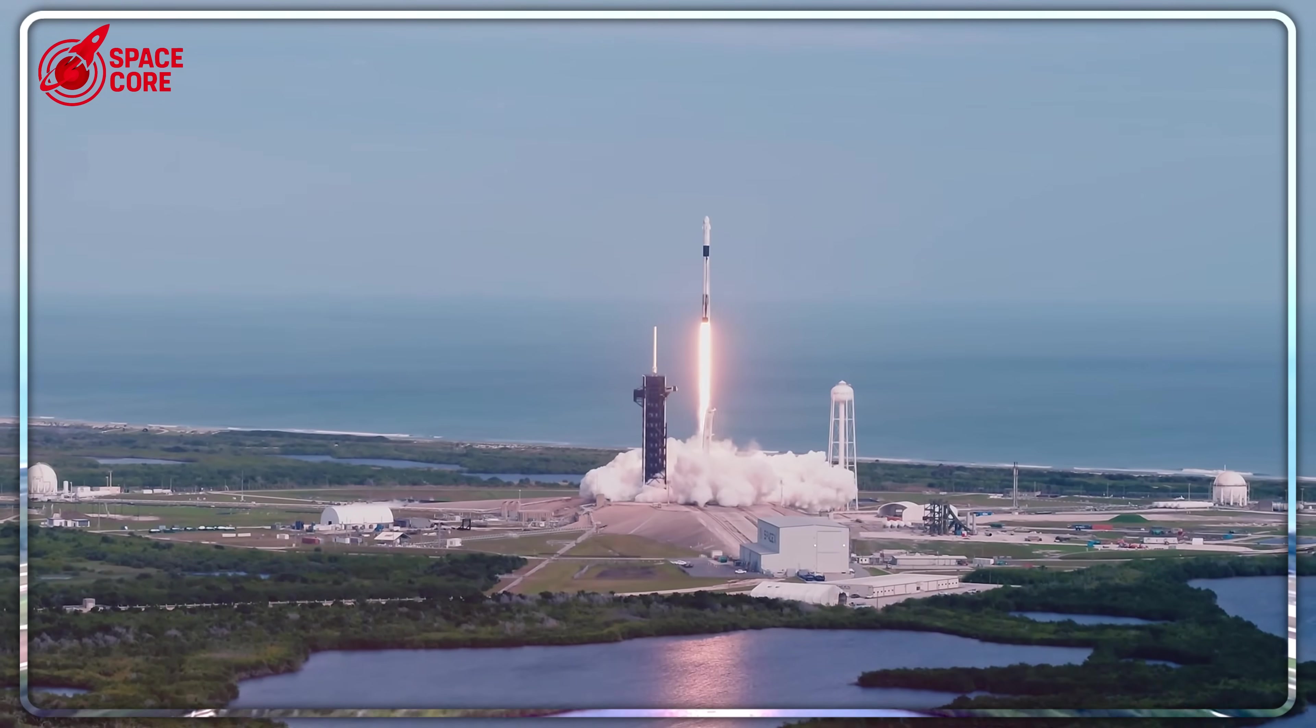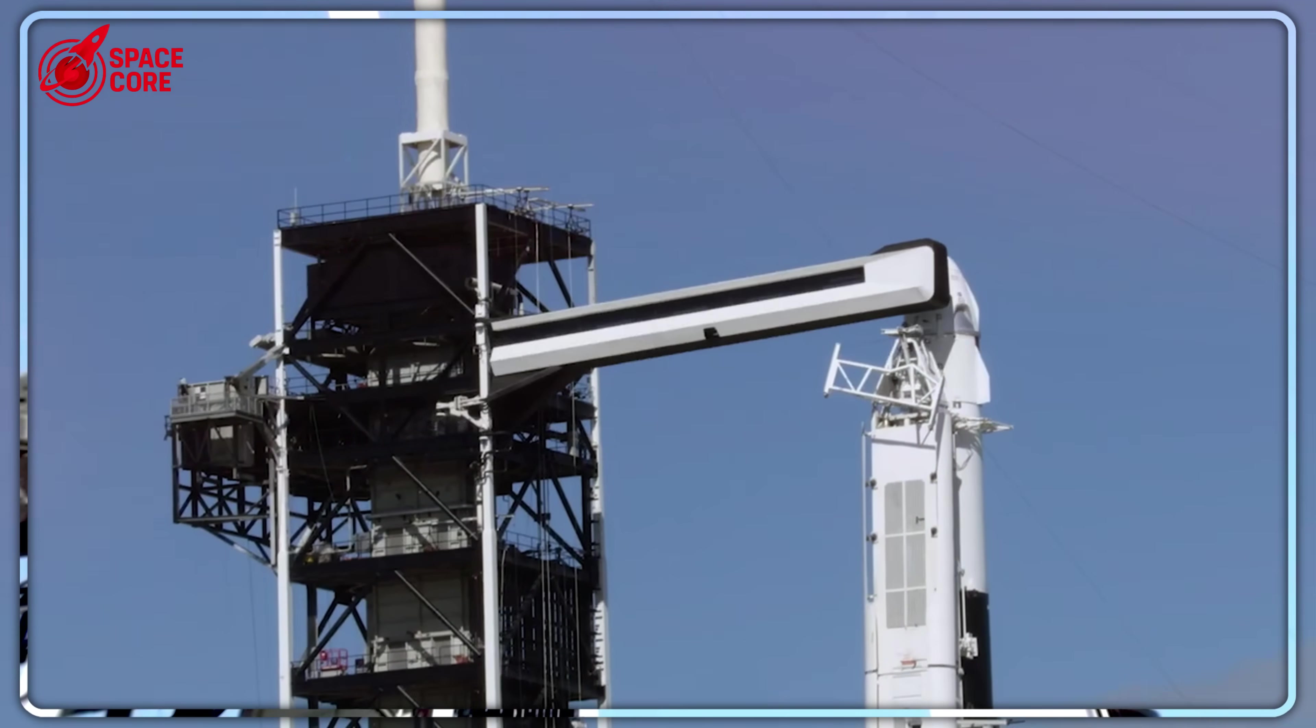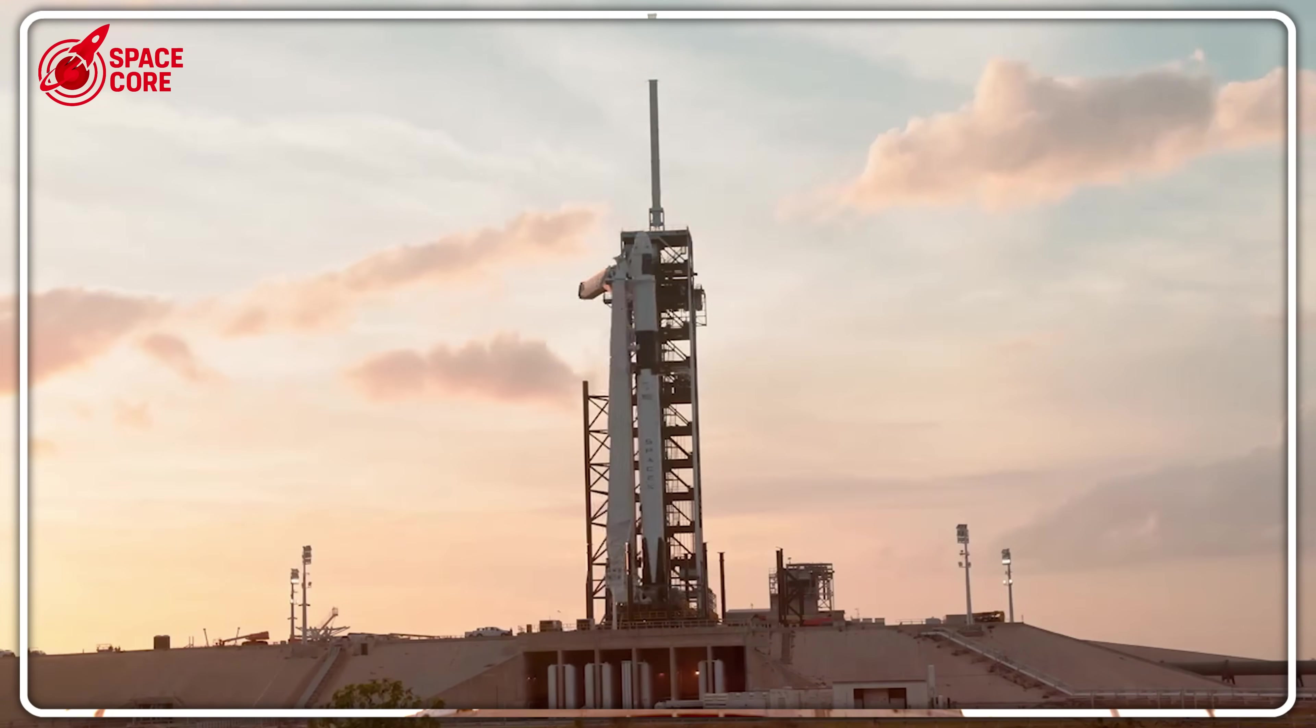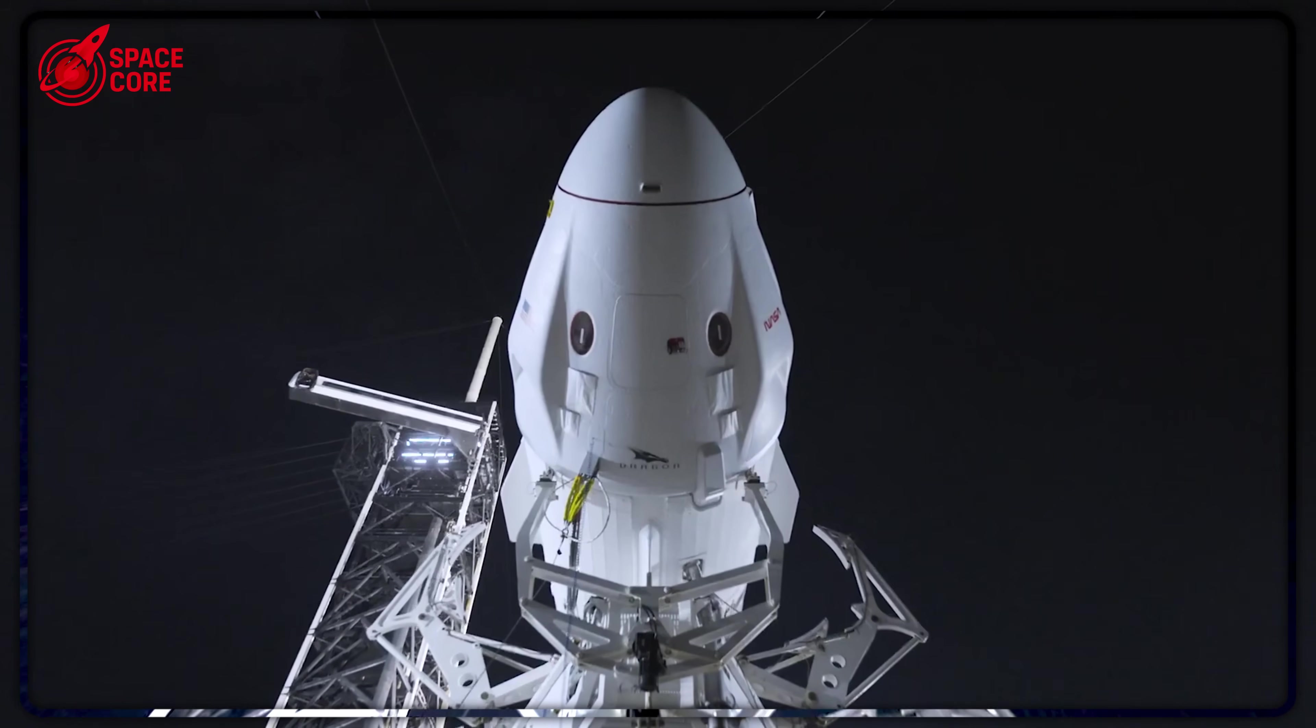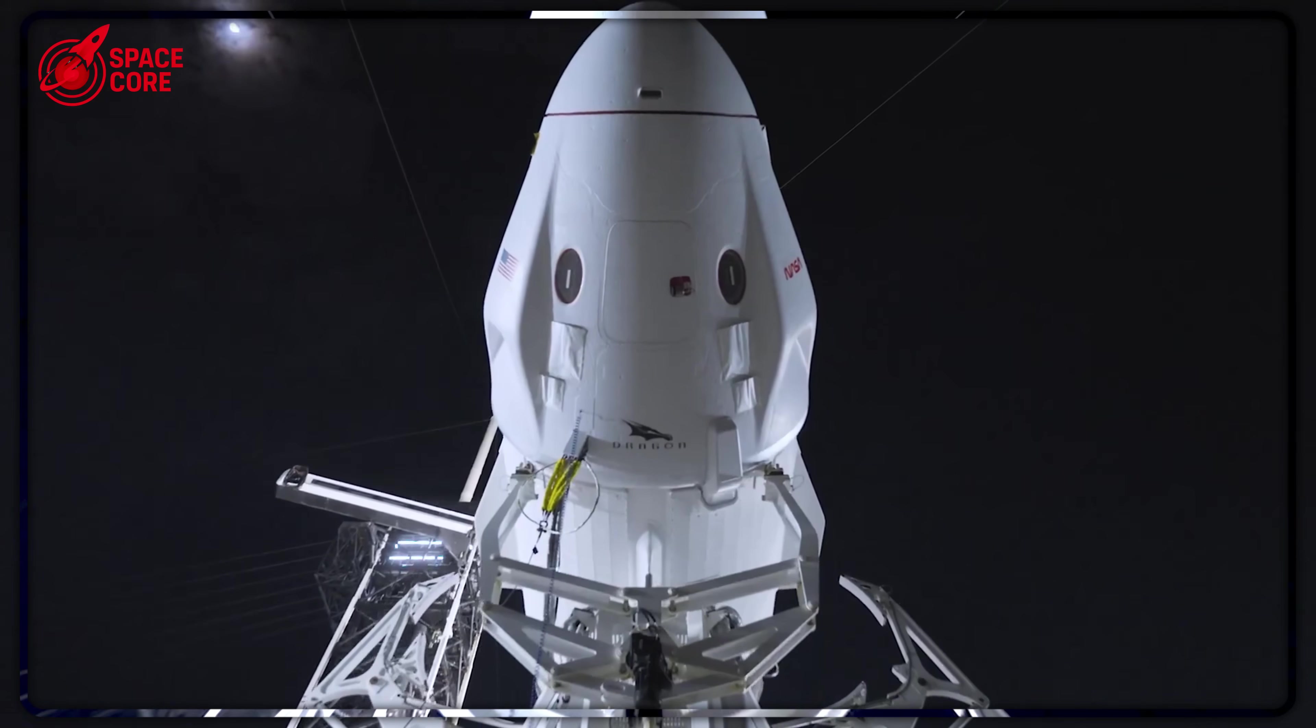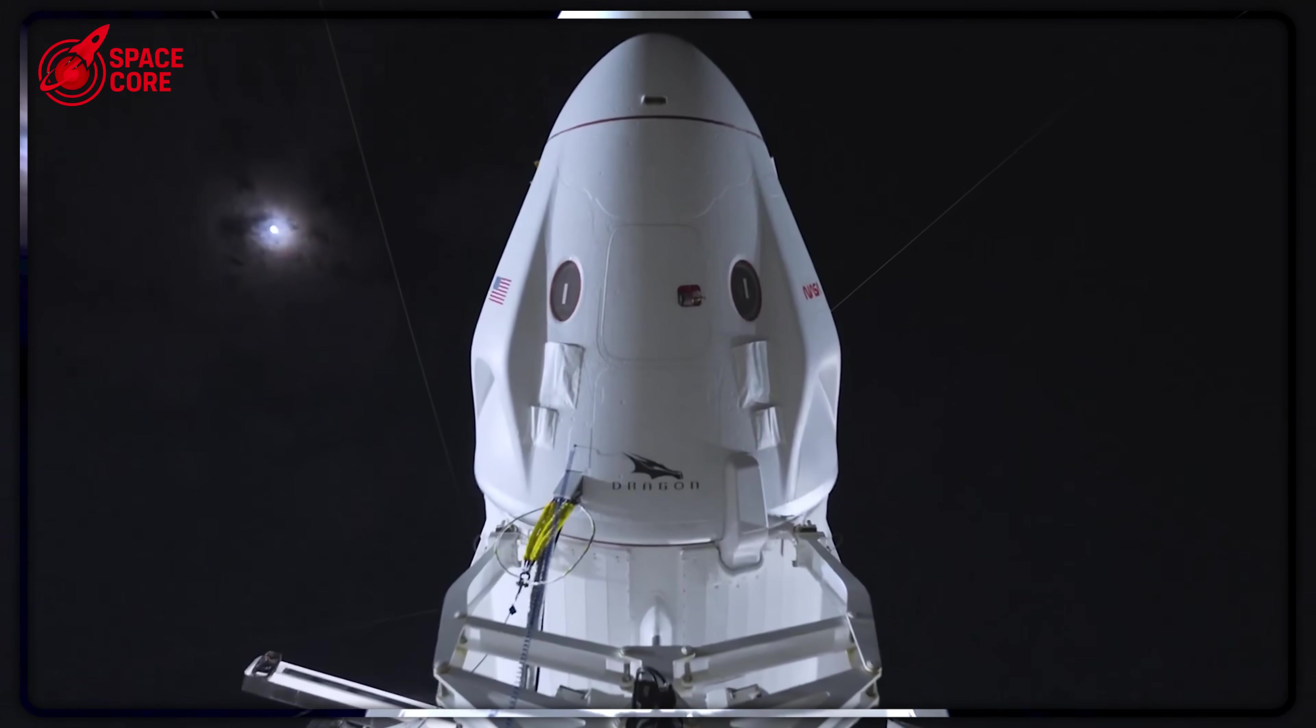The 2026 Mars window is coming fast. SpaceX has maybe 18 months to prove Starship won't explode, like that Block II did in January. If they miss this window, we're waiting until 2028. And by then, China or someone else might be planting flags on Mars instead. This isn't just about rockets. This is about whether humanity becomes multi-planetary in our lifetime, or if we stay trapped on Earth watching Musk's Twitter updates about next time.